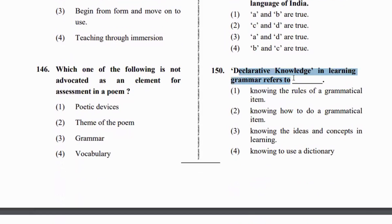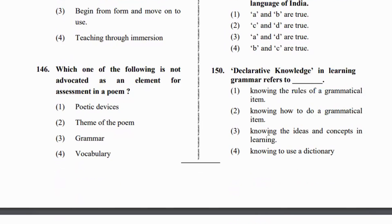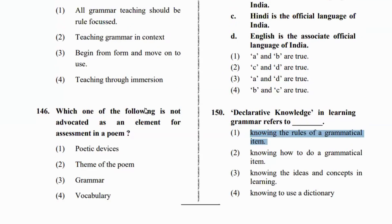Last question: declarative knowledge in learning grammar refers to knowing the rules of grammatical items — knowing the rule, not just how to use it. Declarative knowledge means knowing the rule of a grammatical item. Today we have covered some questions about English. Please put your score in the comment box. If you liked the video, like, share, and subscribe. Thank you so much.